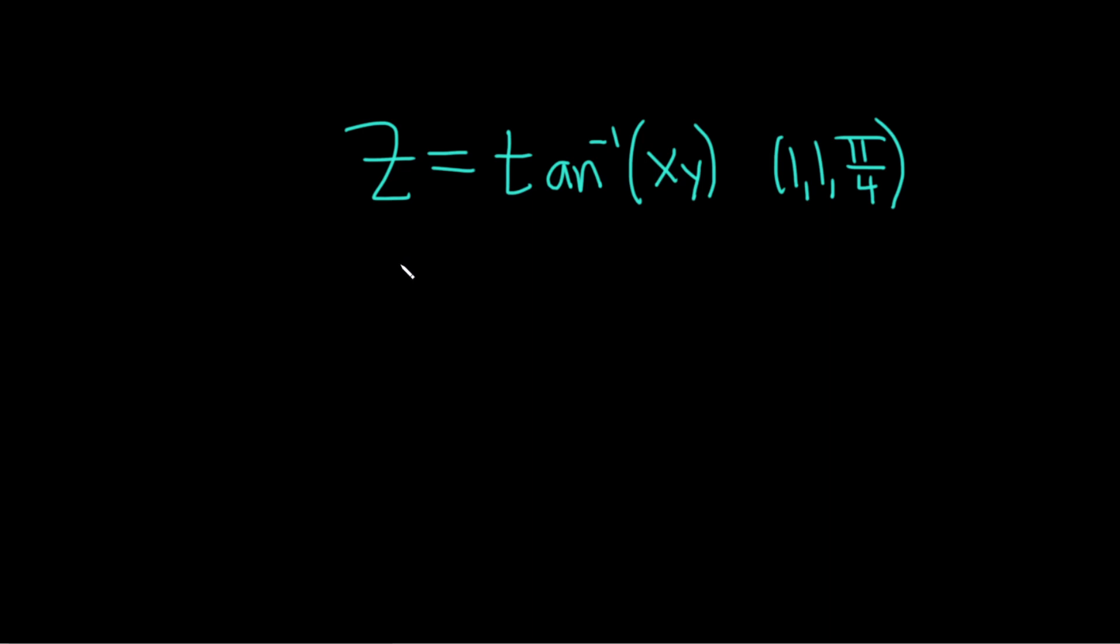Hello, in this problem we're going to find the equation of the tangent plane to this surface. Let's go through it carefully. Solution: the first step is to set it equal to zero. I'll start by subtracting z from both sides. So we have arctan(xy) minus z, and that's equal to zero.